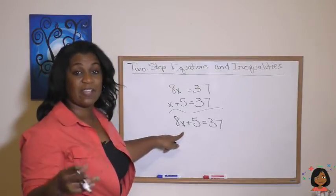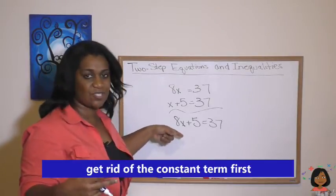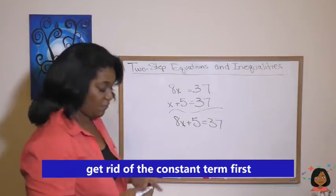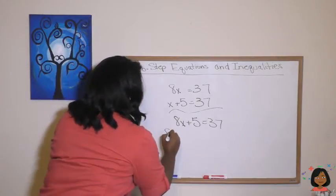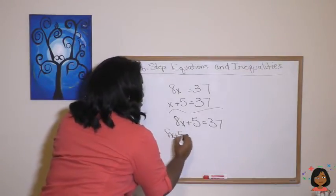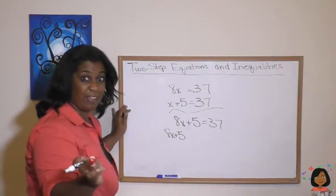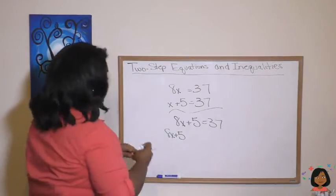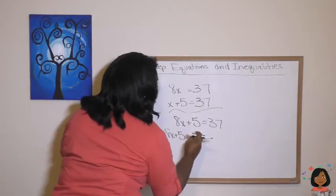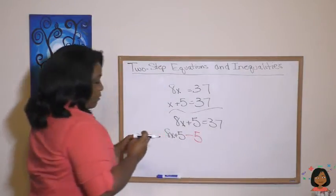So what do you do? The first thing we're going to do is get rid of the number that's not attached to the x. In this case, that's the 5. So I'm going to write this again. 8x plus 5. And how I get rid of the 5 is I'm going to subtract 5. I'm going to do it in red so you can see the difference.